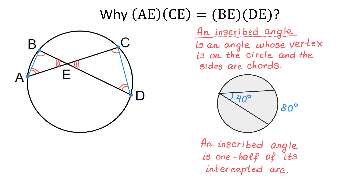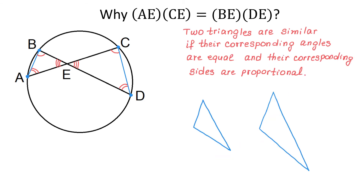Before we continue, let's review the definition of similar triangles. Two triangles are similar if the corresponding angles are equal and the corresponding sides are proportional. Below, we have two similar triangles, and the obtuse angle in the first one is equal to the obtuse angle in the second one. The smallest angle in the first one is equal to the smallest angle in the second one, and this top angle is equal to this one. So the corresponding angles are equal, but the corresponding sides are proportional. The smallest side in the first triangle corresponds to the smallest side in the second triangle, the middle side corresponds to the middle side, and the longest side corresponds to the longest side.